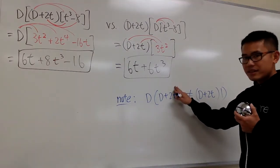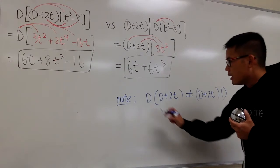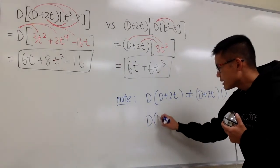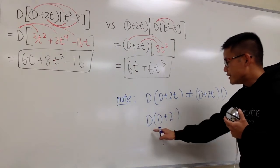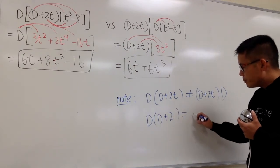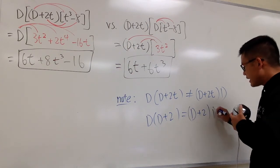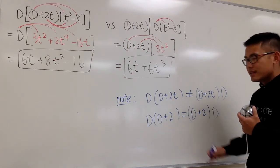If I didn't have the T, then yes, they would be the same. This is not the same because we have the T. On the other hand, if I just have D times (D plus 2), this would be the same as (D plus 2) times D. This is correct; the other is not.